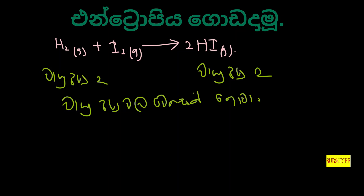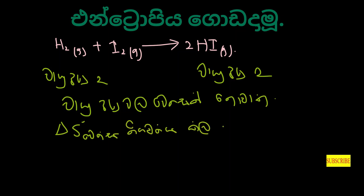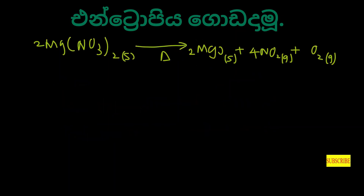This is the end of the process of the entropy, and the end of the process of magnesium nitrate. We are going to use magnesium nitrate. The magnesium oxide of magnesium is made by magnesium more than 2.